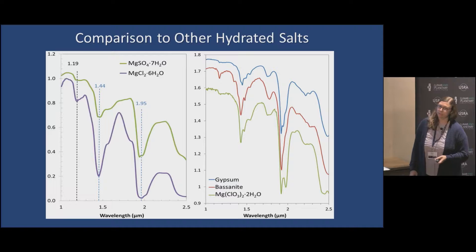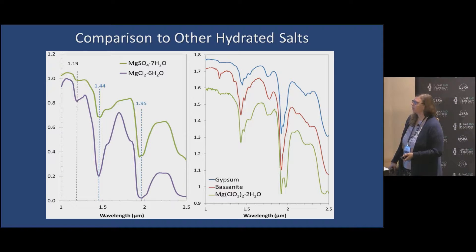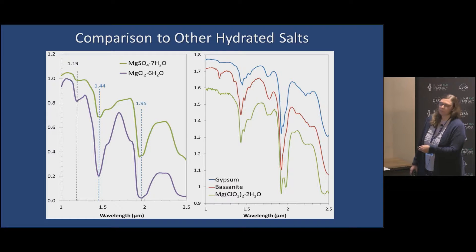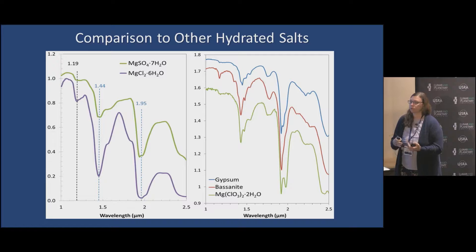Thinking about how to actually detect these, we can compare it to other salts, for instance sulfates. On the left here you have magnesium sulfate 7H2O, or epsomite, and magnesium chloride 6H2O in purple. Similar: you have magnesium and a similar number of waters, so you have a very similar spectra. This is the same issue with other things like gypsum or basenite: calcium sulfate 2H2O and magnesium chloride 2H2O.